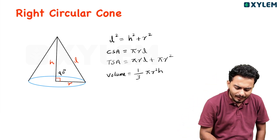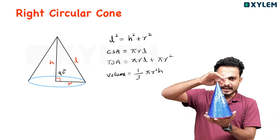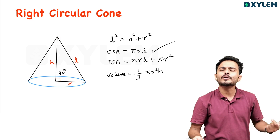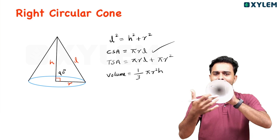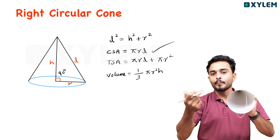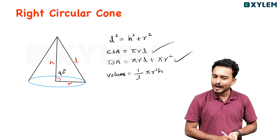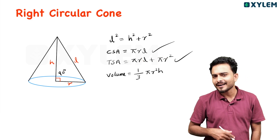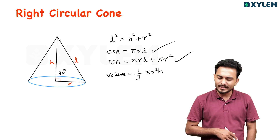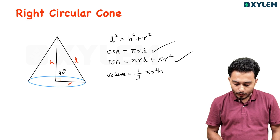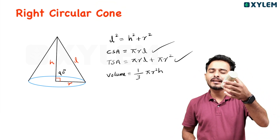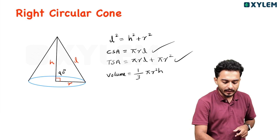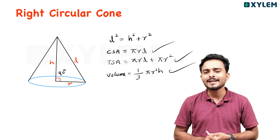The curved surface area of a cone is πRL. Total surface area is πRL + πR squared. The volume of a cone is 1/3 of the cylinder volume, so volume = 1/3 πR squared H.